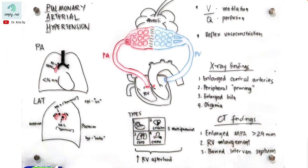That means the right ventricle is having a hard time pumping blood. The right ventricle should pump blood out into the pulmonary artery, then into the arterioles, where blood harvests oxygen from the alveoli at the capillary level, and then brings blood back to the heart via the pulmonary veins and left atrium.